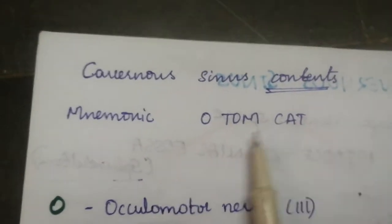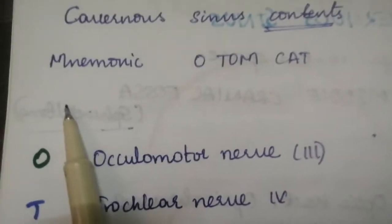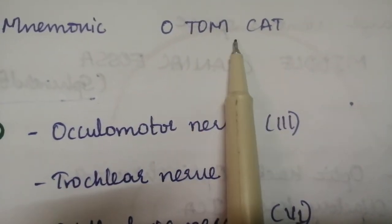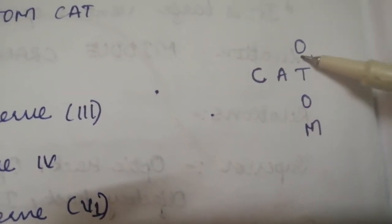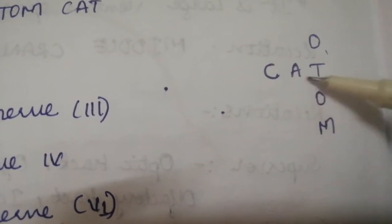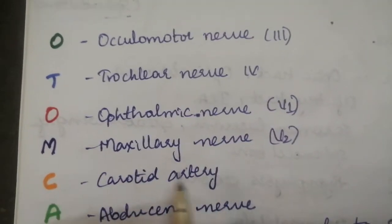Next, I have a content of cavernous sinus. I have a mnemonic here. O, Tom, Cat. Look here. O, Tom, Cat. T is common for O, Tom and Cat. Let me see the contents. O, Tom, Cat.